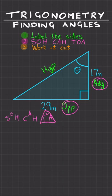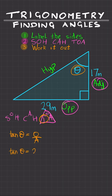Step 3: Work it out. We're trying to find the angle. So tan of the angle equals opposite over adjacent. Substituting the values, tan of the angle equals opposite, which is 29, over the adjacent, which is 17.